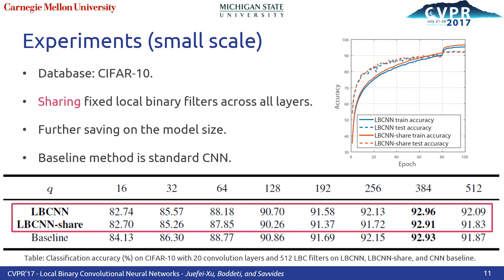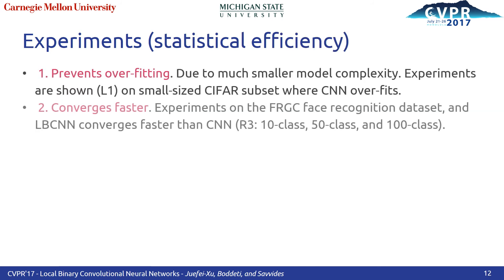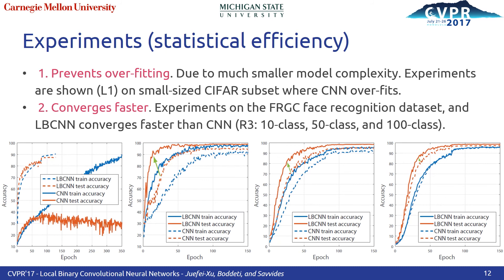Our experiments demonstrated negligible difference in performance between LBCNN with and without shared filters. Empirically, we have observed that LBCNN has the following properties: number one, it can be trained on a much smaller size dataset without overfitting, due to much smaller model complexity; number two, it converges faster than standard CNNs, as observed across many visual datasets.